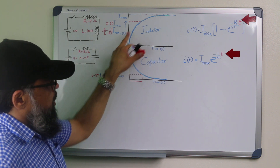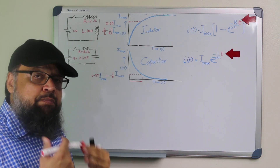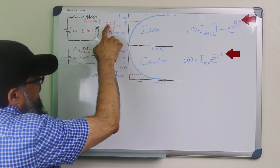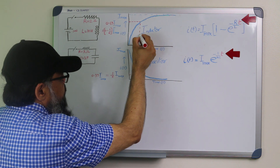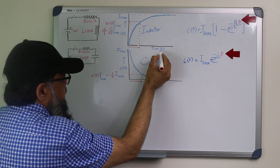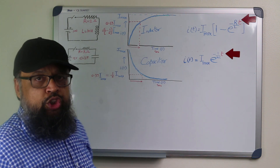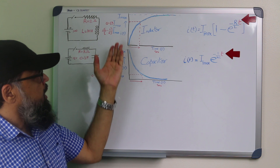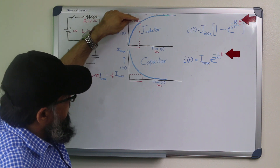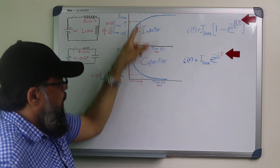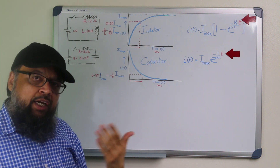Similarly, for a rising graph, the time constant is the time taken to achieve 63% of its maximum value — so 0.63 of the I-maximum value. If you drop a perpendicular and measure this time in seconds, this is one way of measuring the time constant using the graph. You can physically take it on a scale, find 63% of that scale, drop a perpendicular on the graph, then draw a perpendicular on the x-axis and calculate the time.